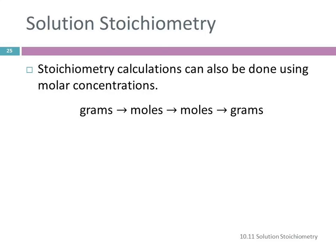So if we, instead of having a mass, if we have a volume, liters of solution with a molarity, we can go from liters to moles to moles to grams. Or we may end up going at the end to a volume of a solution. So it's a variation. The thing that is the same in all stoichiometry problems is moles to moles in the middle.